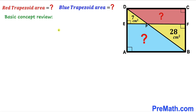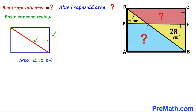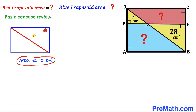Before we proceed any further, let me go over the basic review. Let's focus on this blue rectangle and assume the area of this blue rectangle is 10 cm². This main diagonal divides the area of this rectangle into two equal parts. If the total area of this blue rectangle is 10 cm², then the area of each triangle is going to be 5 cm².